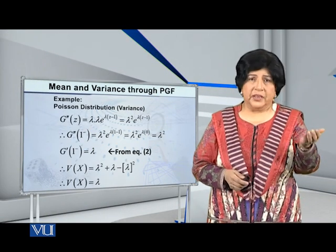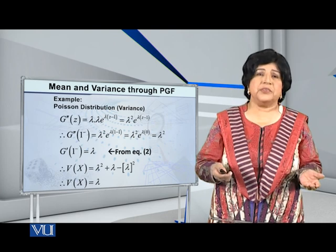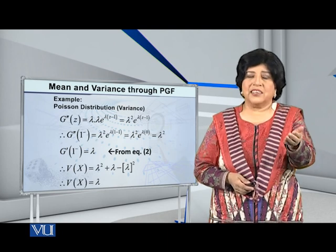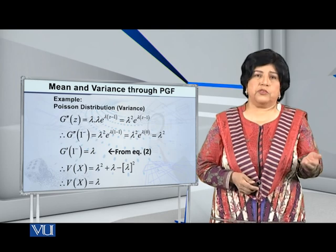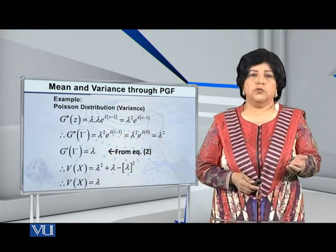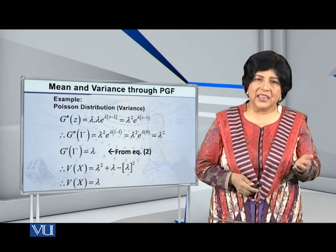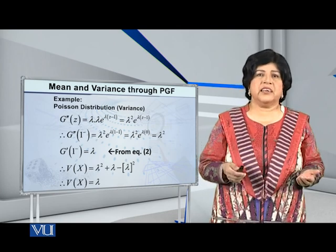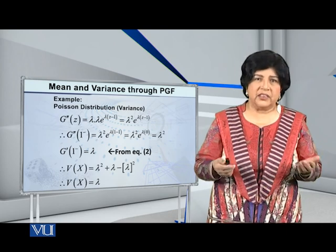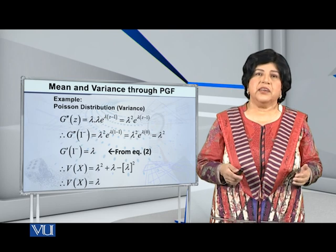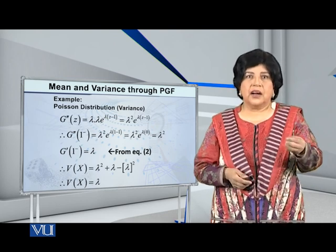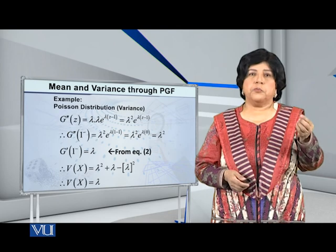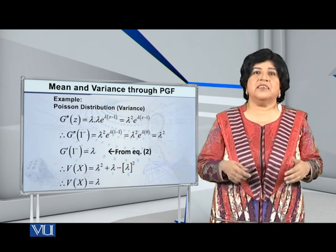Now we substitute the values into the variance formula. Variance of x equals g double prime of 1 minus, which is lambda squared, plus g prime of 1 minus, which is lambda, minus g prime of 1 minus whole squared, which is minus lambda squared. It is clear that lambda squared and minus lambda squared cancel out, and we are left with variance of x equal to lambda.